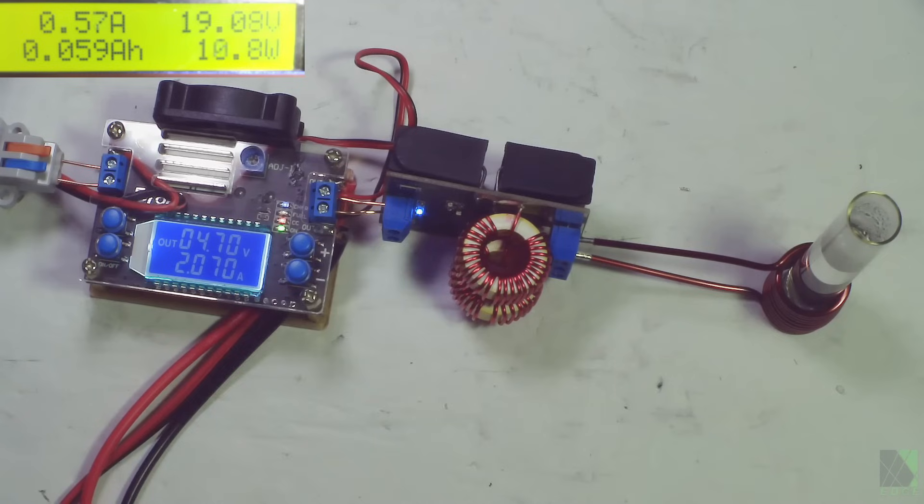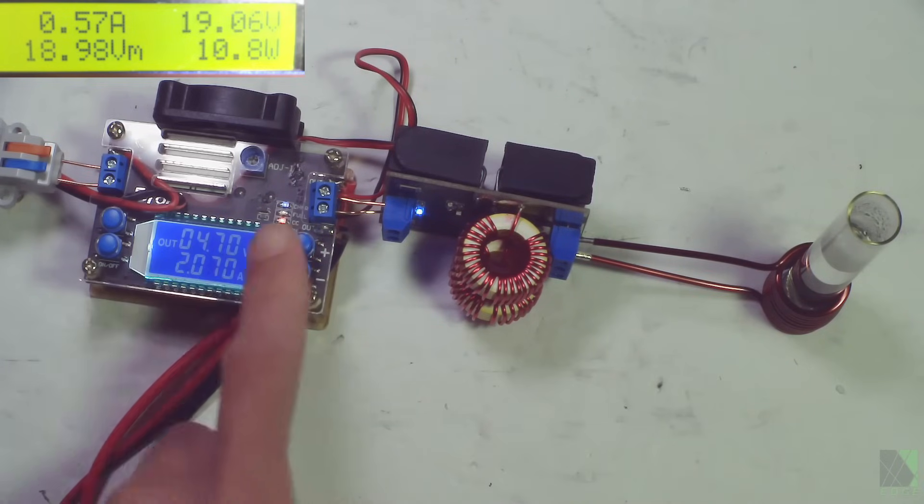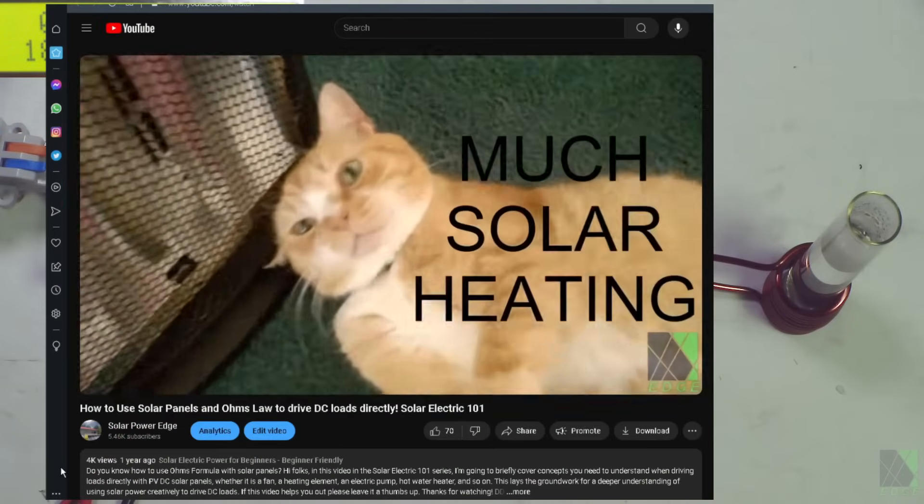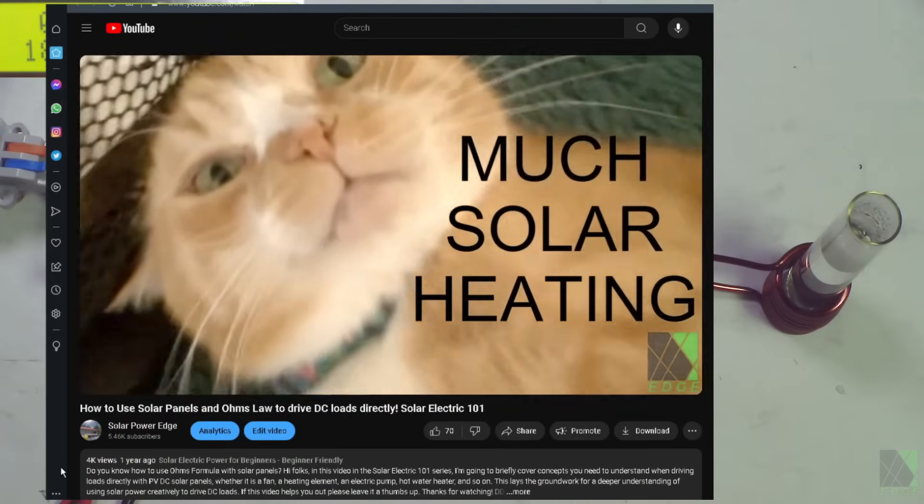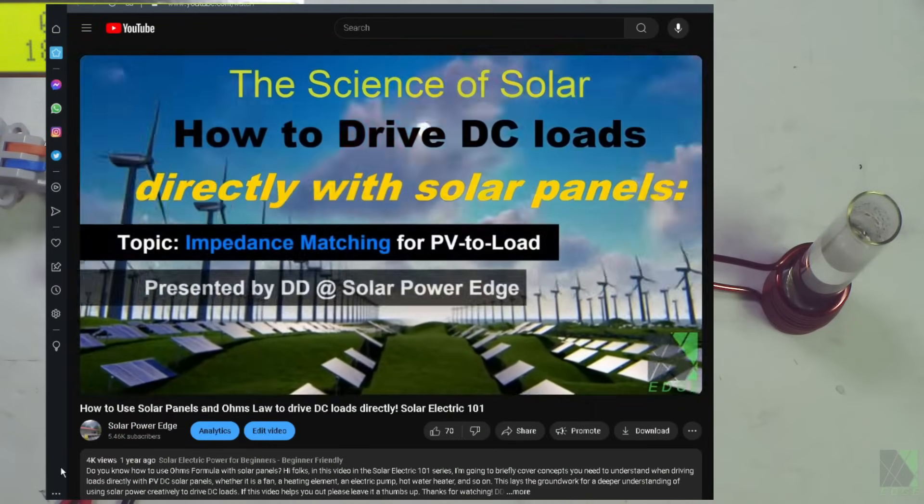Unfortunately I can't just feed the solar panel right into this induction circuit because the impedance of this induction circuit is rather low and it would just pull the solar panel down to nothing. That's why I have the DC to DC converter here to sit in between and adjust the impedance or match the impedance between the solar panel and this induction circuit. If you're interested in learning more about running DC loads directly from PV solar panels I have a specific video on that topic linked in the description.